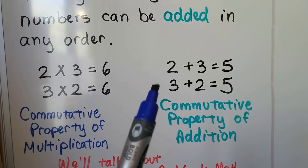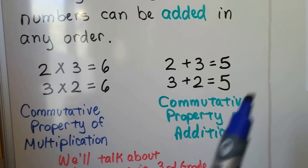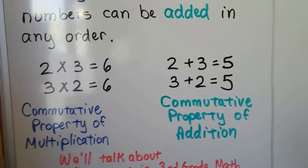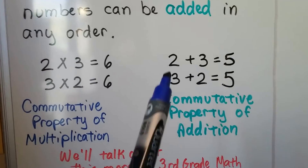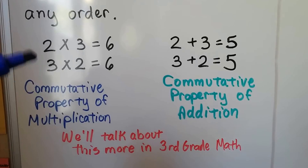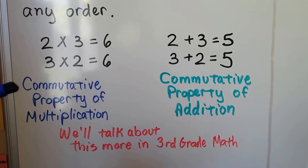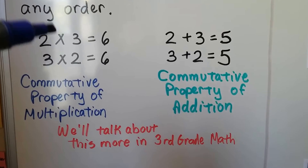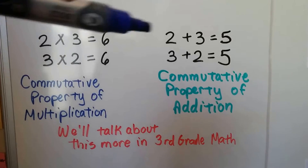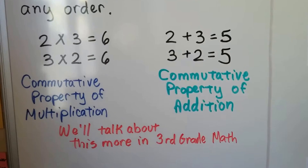It's the same thing with addition. 2 plus 3 is equal to 5, and 3 plus 2 is equal to 5. It didn't matter which number we had first and which number we had second. The reason that this happens is from a thing called the commutative property. Because there's a multiplication sign here, that's the commutative property of multiplication. And because there's addition signs here, that's the commutative property of addition.